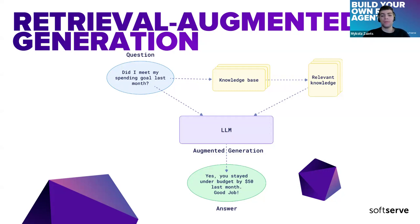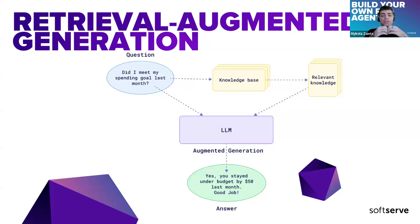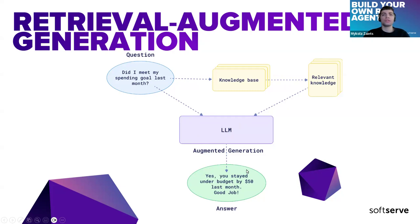We take the found relevant information and pass it to our LLM along with the original user question, so the LLM will generate an answer based on the provided knowledge and the original question. As output we will have some augmented generated answer — for example, 'new state under budget by $15 last month — good job.' So that's basically how it works.